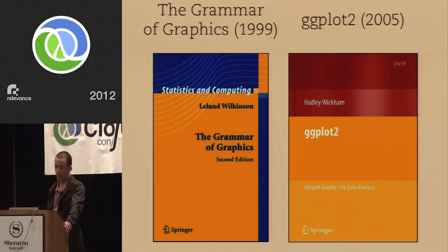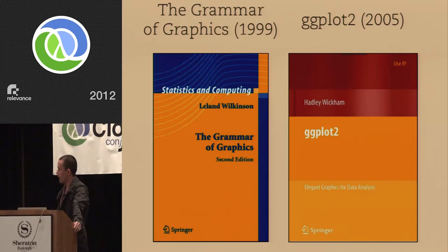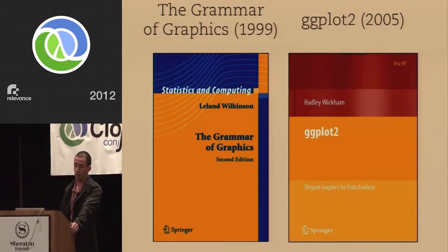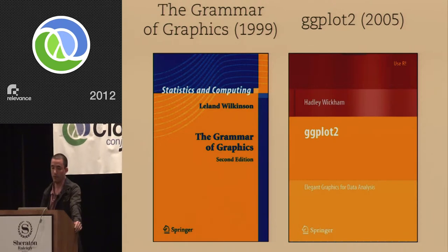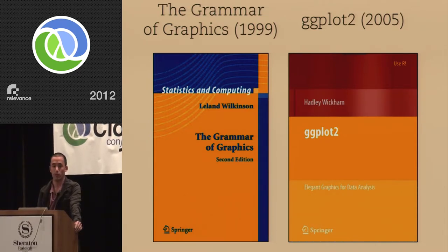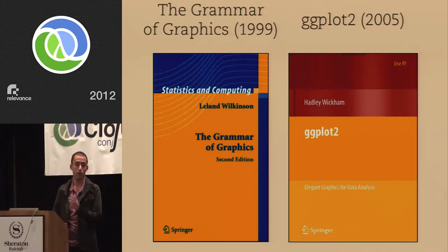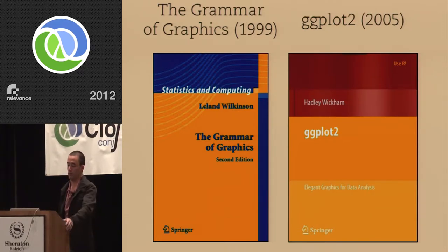The way I actually found out about the grammar of graphics was through another thing. In 2005, another statistician named Hadley Wickham implemented a simplified version of the grammar of graphics as part of his PhD thesis, implemented and embedded in the R programming language. This is where a lot of people learned about it and started using it. So instead of having cookie-cutter graphics, you could actually use the grammar of graphics in R to build kind of custom stuff, which was really neat.